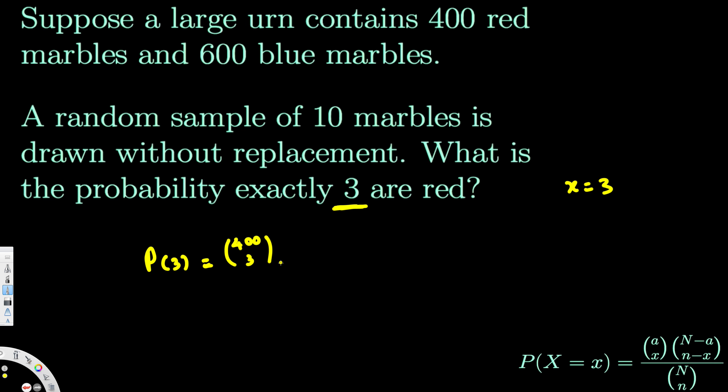So this is a combination. Now you have to plug it in the combination notation and calculate this one. And if 3 of them are red, we have to have 7 of them blue. The total blue is 600, so we have to put 600 choose 7.